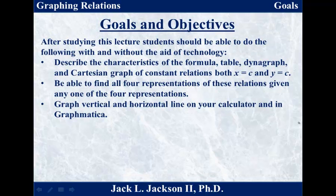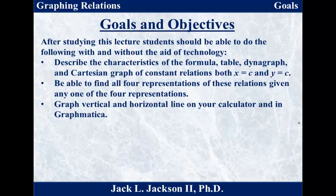Our basic goals and objectives are pretty simple this time. You should be able to, with and without the aid of technology, describe the characteristics of the formula, table, dynagraph, and Cartesian graph of constant relations — both for x equals a constant and y equals a constant, in other words both for horizontal and vertical lines. Be able to find all four representations given any one of the four: formula, table, dynagraph, or Cartesian graph. You should be able to recognize that it is a constant relation and which one — vertical or horizontal line — and find the other three representations. And of course, with technology, you should be able to graph vertical and horizontal lines on your calculator, in Graphmatica, and by hand as well.